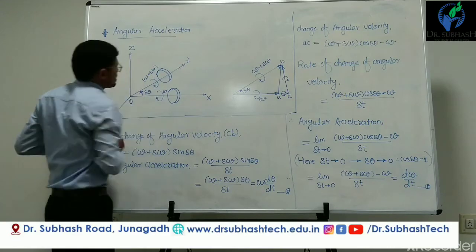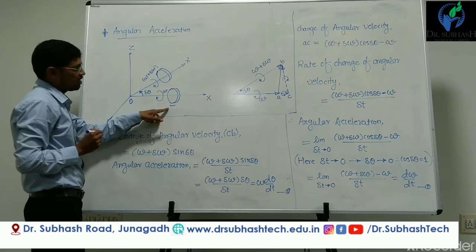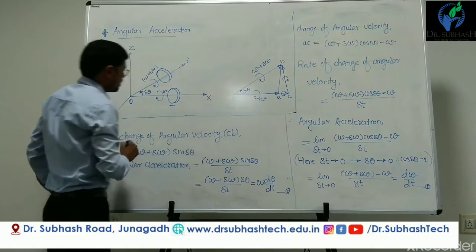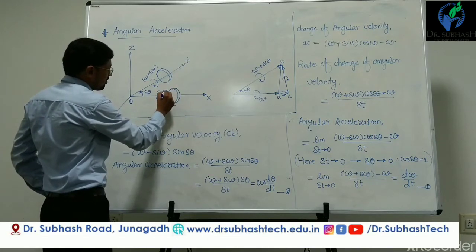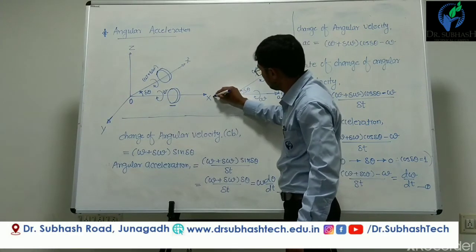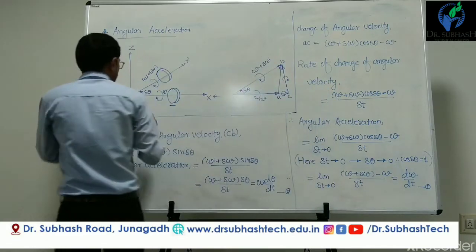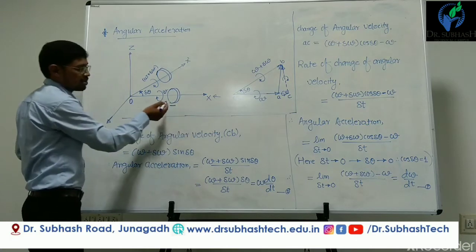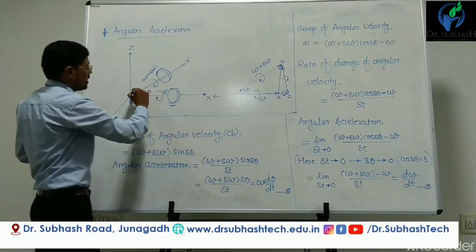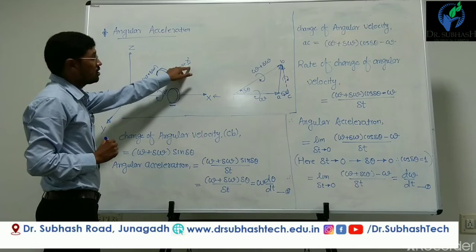Now let us see angular acceleration. Consider one rotor rotating about the X axis — we say the rotor is spinning about the X axis, so OX is the spinning axis. The rotor is rotating with omega angular speed in a clockwise direction. After some period of time we displace this axis of rotation through an angle delta theta. The new axis of rotation is OX dash, and the new angular speed is omega plus delta omega.